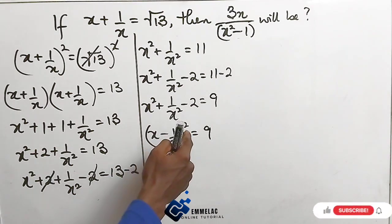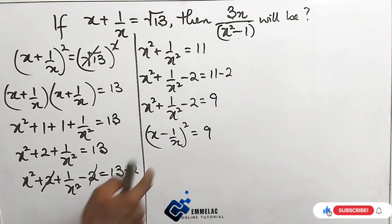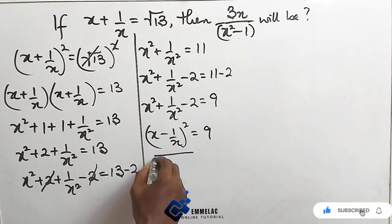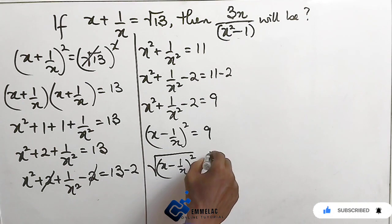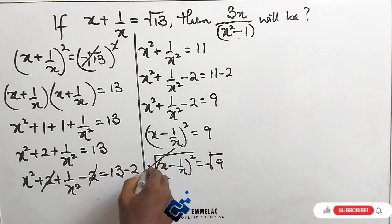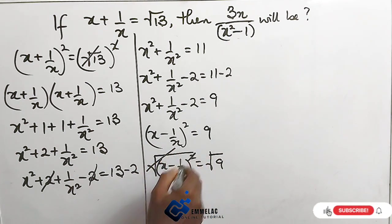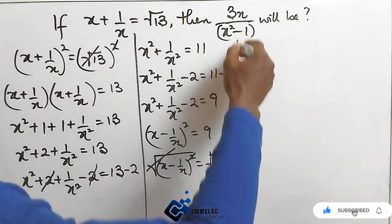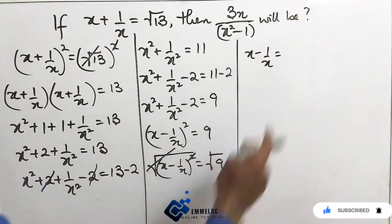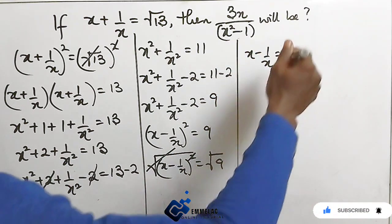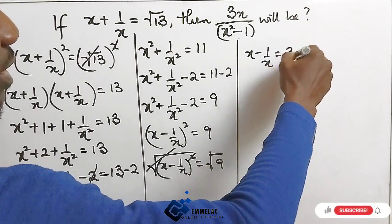Now we need to square root both sides. By taking the square root of both sides, we have x minus 1 over x, all to the power of 2, equals the square root of 9. The square root cancels out the power of 2. Moving further, we now have x minus 1 over x equals the square root of 9, which gives us 3.